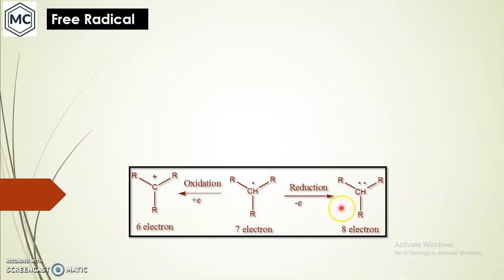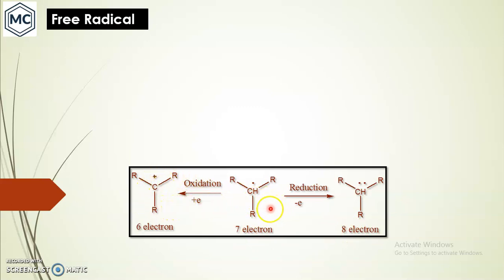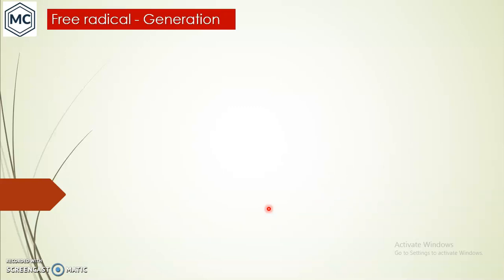You can see the difference between free radical, carbocation, and carbanion. Free radical has seven electrons. On reduction — gaining one more electron — it forms a carbanion with eight electrons. On oxidation — losing one electron — it forms a carbocation. From this diagram you can understand the difference in the number of electrons in free radical, carbocation, and carbanion.